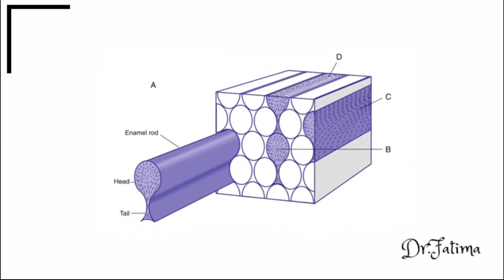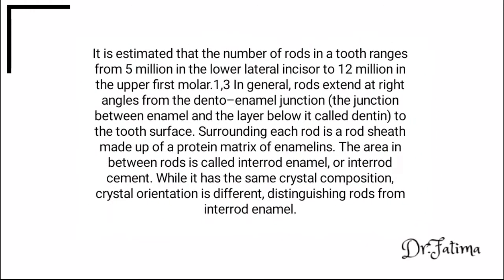Millions of carbonated hydroxyapatite crystals are arranged along thin structures called rods that are 4 micrometers to 8 micrometers in diameter. It is estimated that the number of rods in a tooth ranges from around 5 million in lower lateral incisors to 12 million in upper first molars. In general, rods extend at right angles from the dentin-enamel junction to the tooth surface.